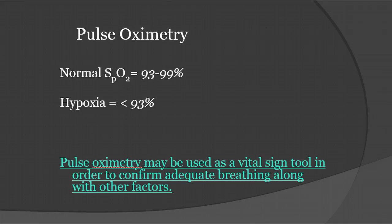For pulse oximetry, a normal SpO2 is going to be anywhere from 93 to 99%. Normally individuals are going to be within the 96 to 99% range. If you have a patient that is between 93 and 96% and they're experiencing difficulty with breathing, it is probably a good idea to make sure that you put them on oxygen.